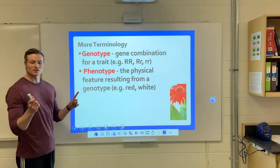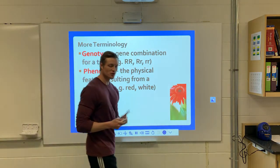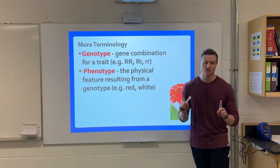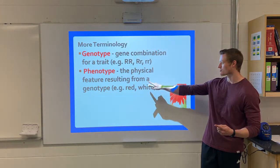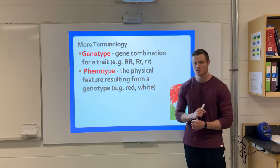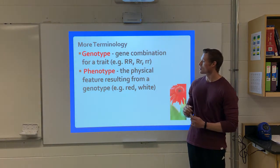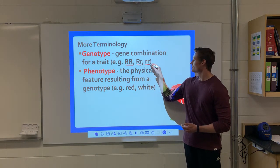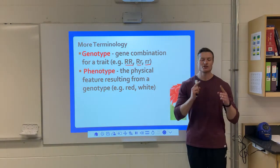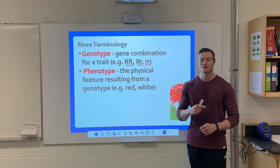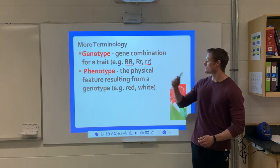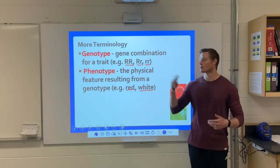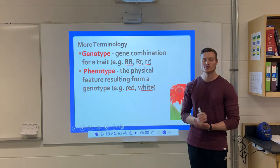Genotype is your gene combination — you cannot see your genotype, it's inside your DNA. You can guess what your genotype is based on your phenotype, which is what we physically see. You might be double dominant, dominant-recessive, or double recessive. It is your genotype, which you inherit from your parents, that determines your phenotype — the physical feature. Your genotype will always give you your phenotype, but you cannot see your genotype — you can only see the physical characteristics.